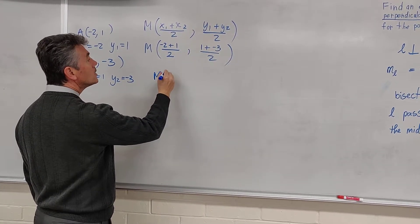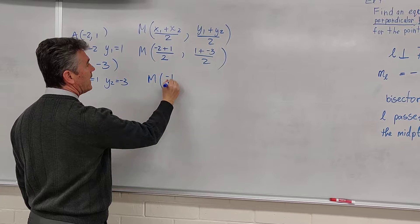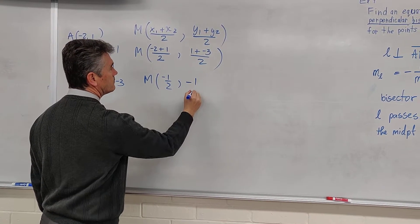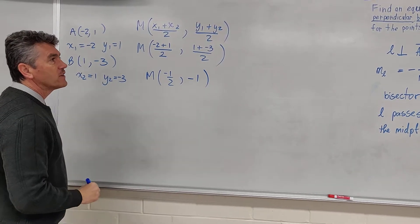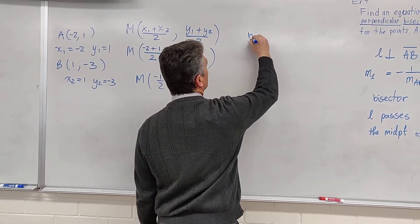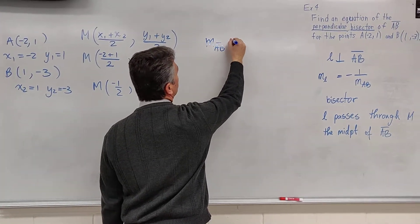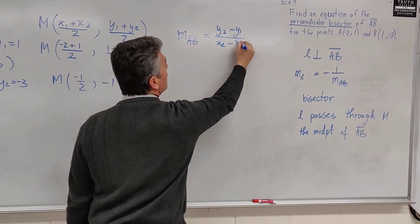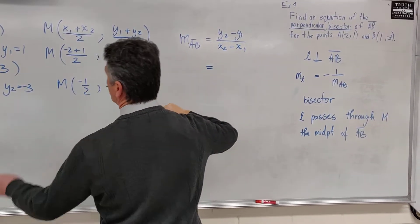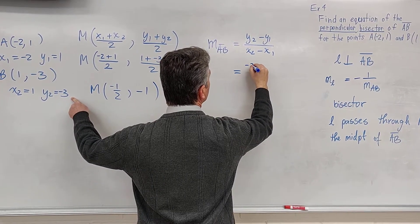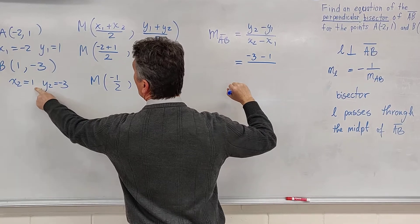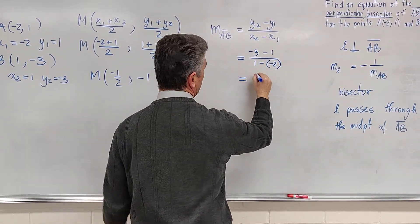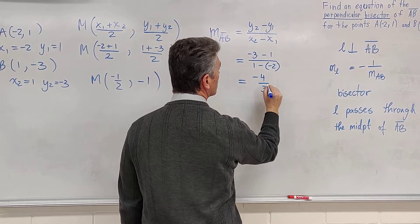B has coordinates 1 and negative 3, which means x-sub-2 is 1 and y-sub-2 is negative 3. So the coordinates of M are negative one-half and — 1 plus negative 3 is negative 2, divided by 2 is negative 1. Now let's figure out the slope of segment AB. It is the change in y over the change in x: negative 3 minus 1, divided by 1 minus negative 2, which is negative 4 over 3.